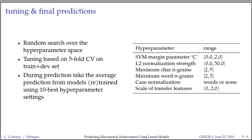Two final bits of model description before we switch to the discussion of results. For tuning, we use random search over the hyperparameters displayed on the slide. They are described in more detail in the paper and specific questions are welcome at the end of the talk. For each random parameter setting drawn from this hyperparameter space, we perform 5-fold cross-validation on the combined training and development set and record the scores along with the parameter settings. During prediction, we pick the 10 best hyperparameter settings according to the scores, then retrain the model or models and take the average prediction for the regression model or majority vote for the classifier models.